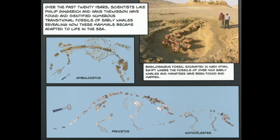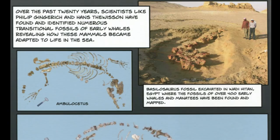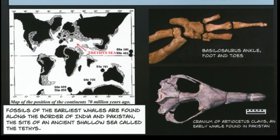Over the past 20 years, scientists have found and identified numerous transitional fossils of early whales, revealing how these mammals became adapted to life in the sea. The photo on the top right is a Basilosaurus fossil found in Egypt, where the fossils of over 400 early whales and manatees have been found and mapped. Fossils of the earliest whales are found along the border of India and Pakistan, which is the site of an ancient shallow sea.